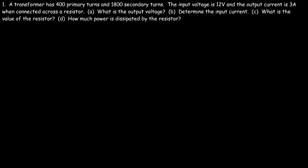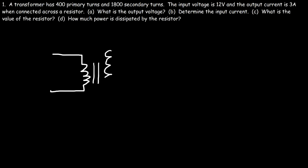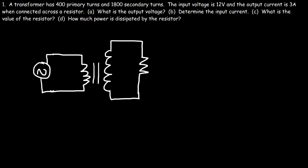Let's work on some problems. Problem 1: A transformer has 400 primary turns and 1800 secondary turns. The input voltage is 12 volts and the output current is 3 amps when connected across a resistor. The primary coil is connected to a source voltage and the secondary coil is connected across the resistor. What is the output voltage?